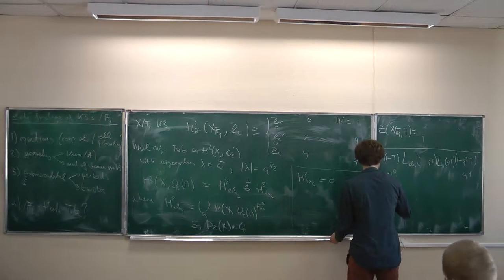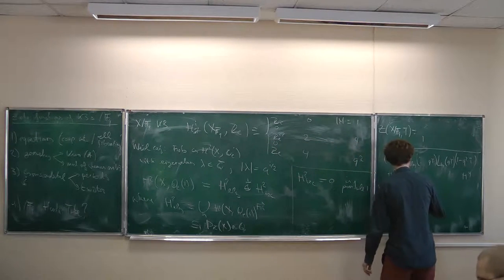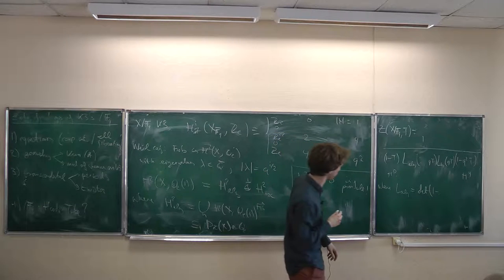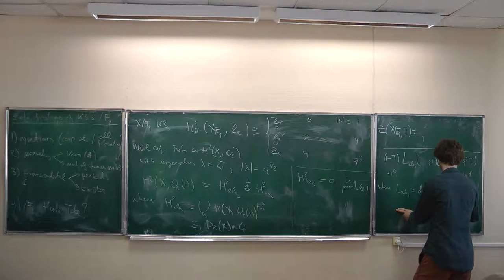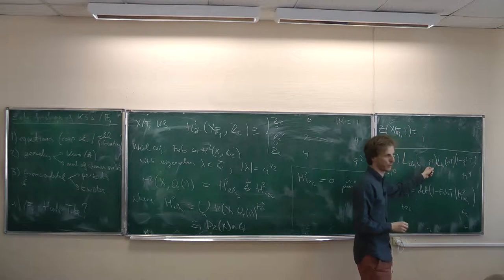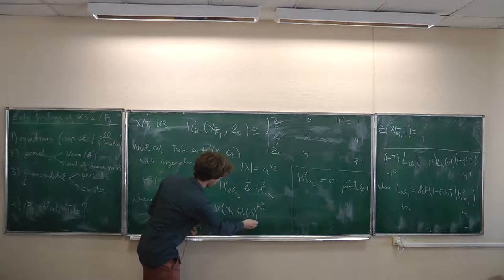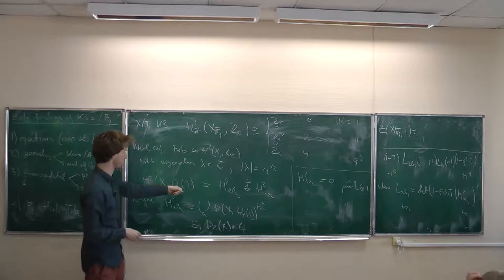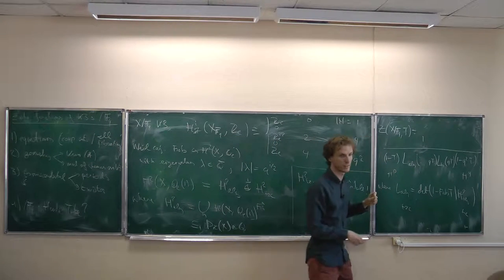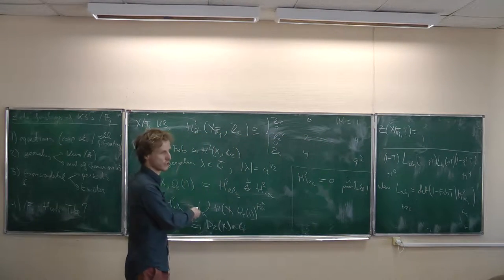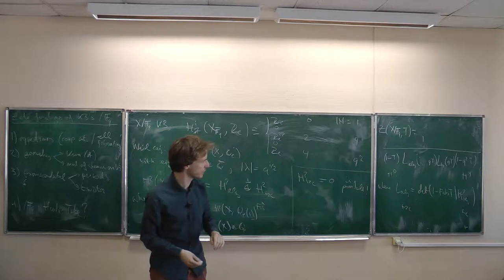Where L_alg is the reciprocal characteristic polynomial of Frobenius acting on H²_alg, and the same for transcendental. The extra factor q here is to shift back the normalization we put in when passing from H² to H²(Ql(1)) — we divided by q there, and now we multiply by q again. Once you know this cohomology, you know that the zeta function has this shape.